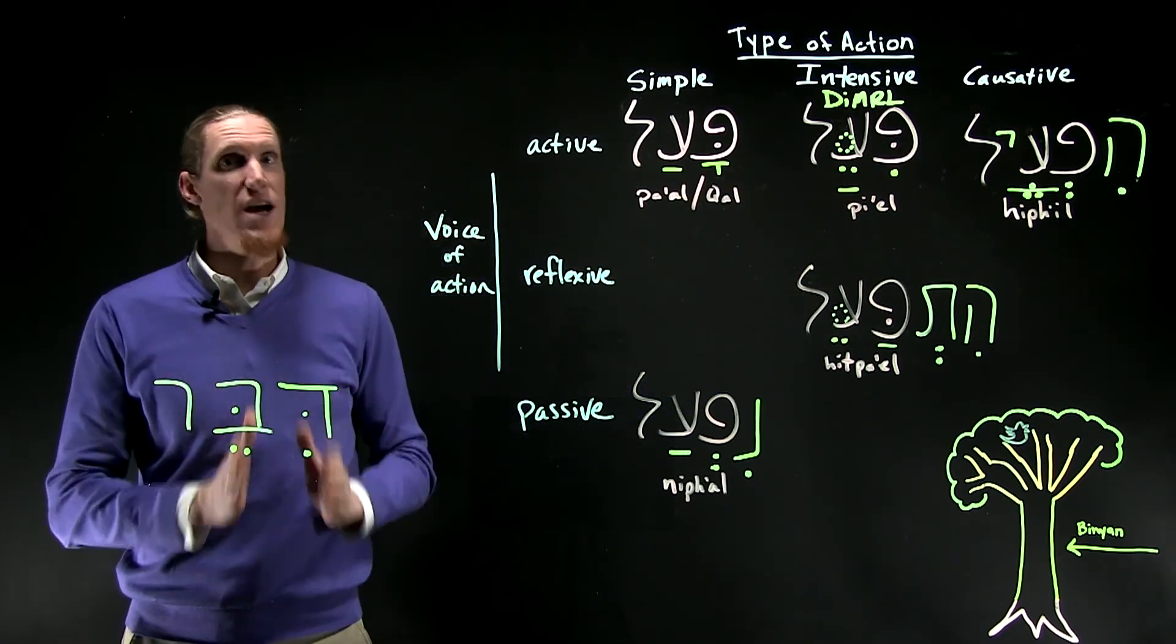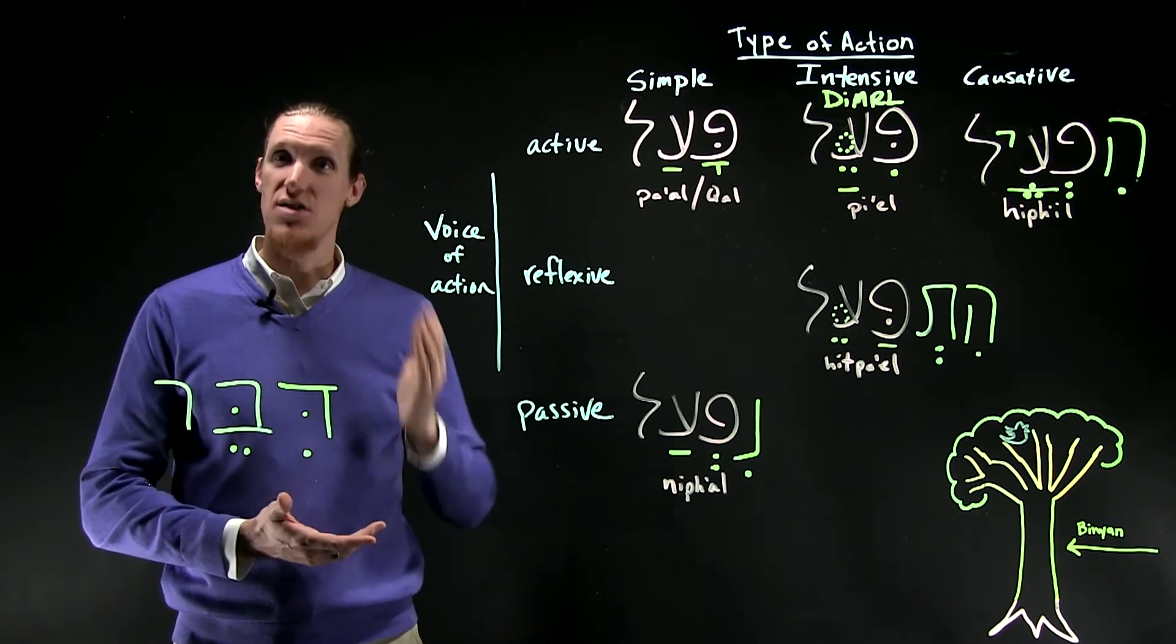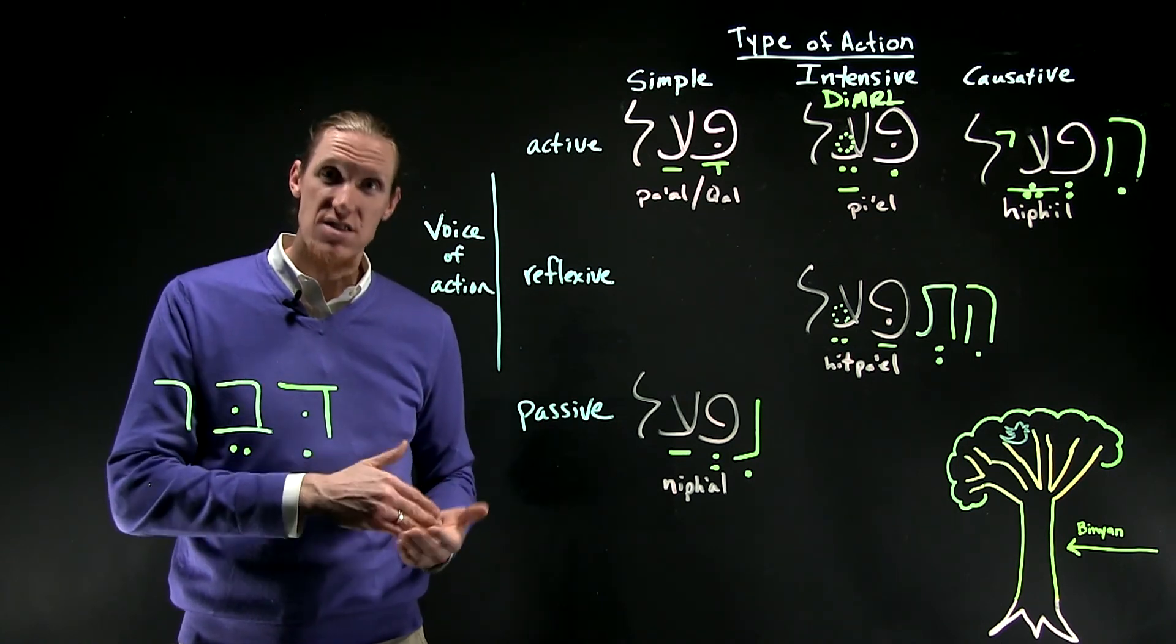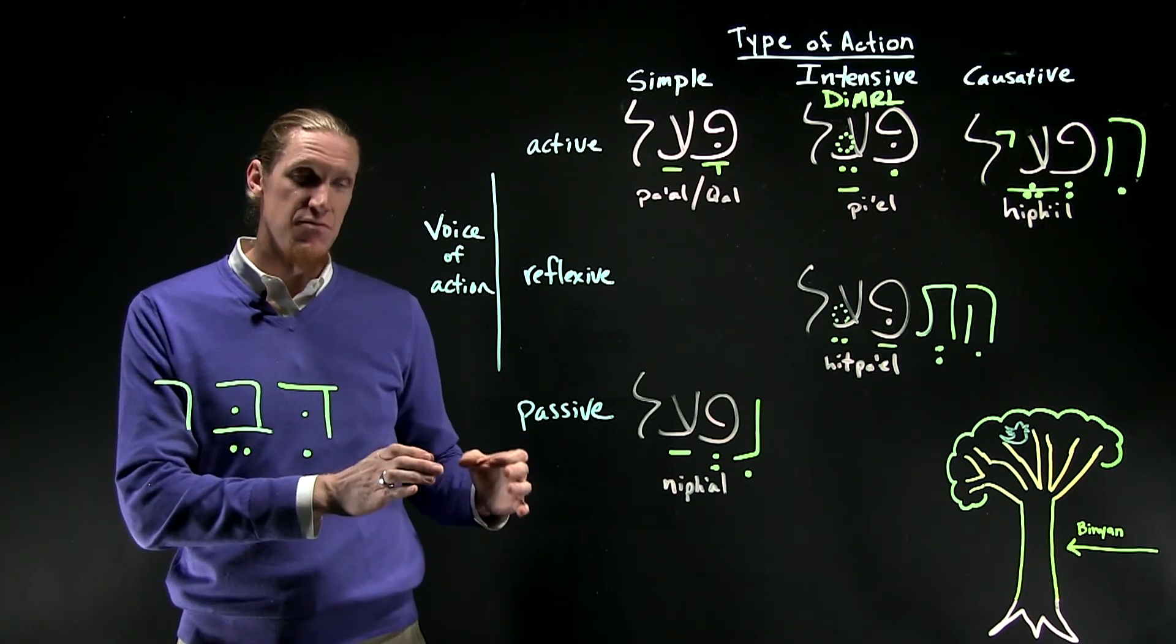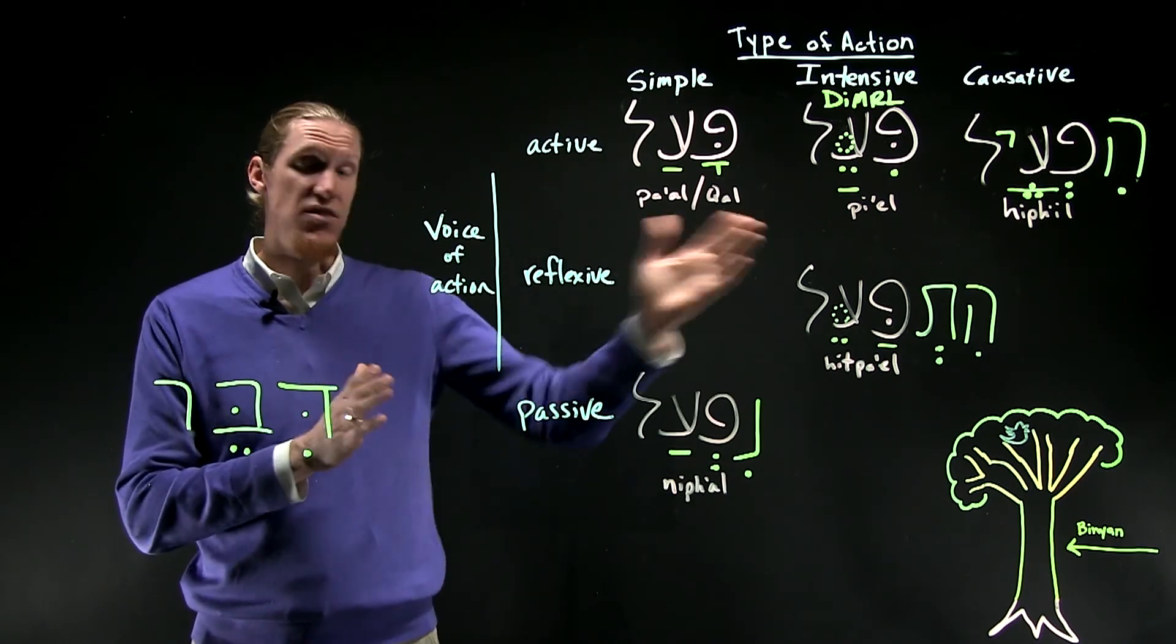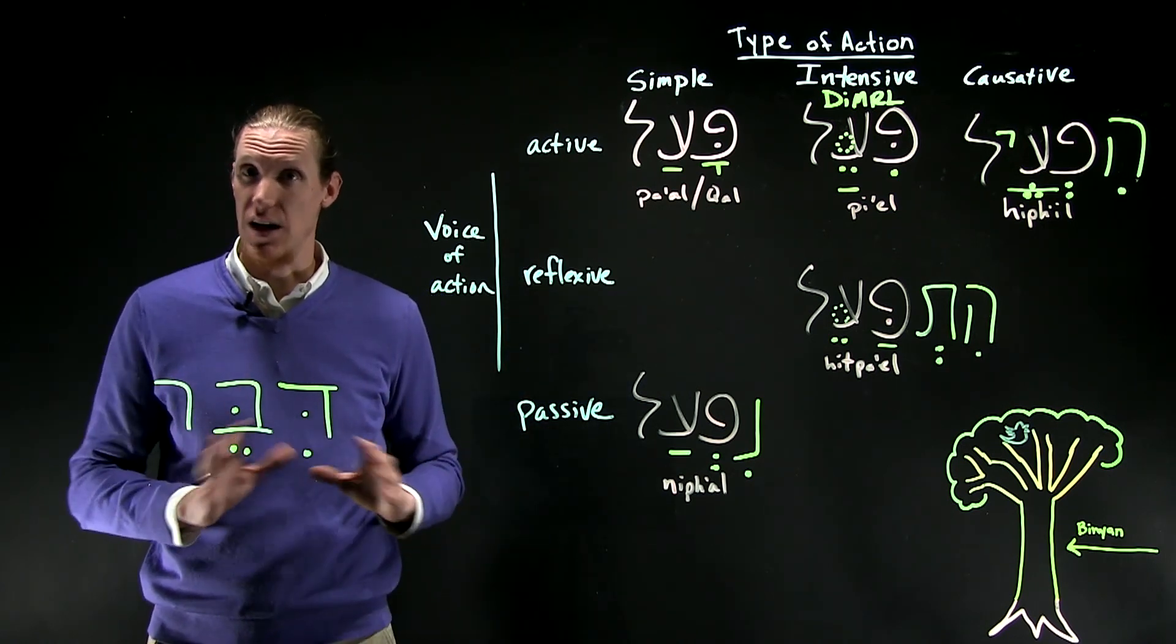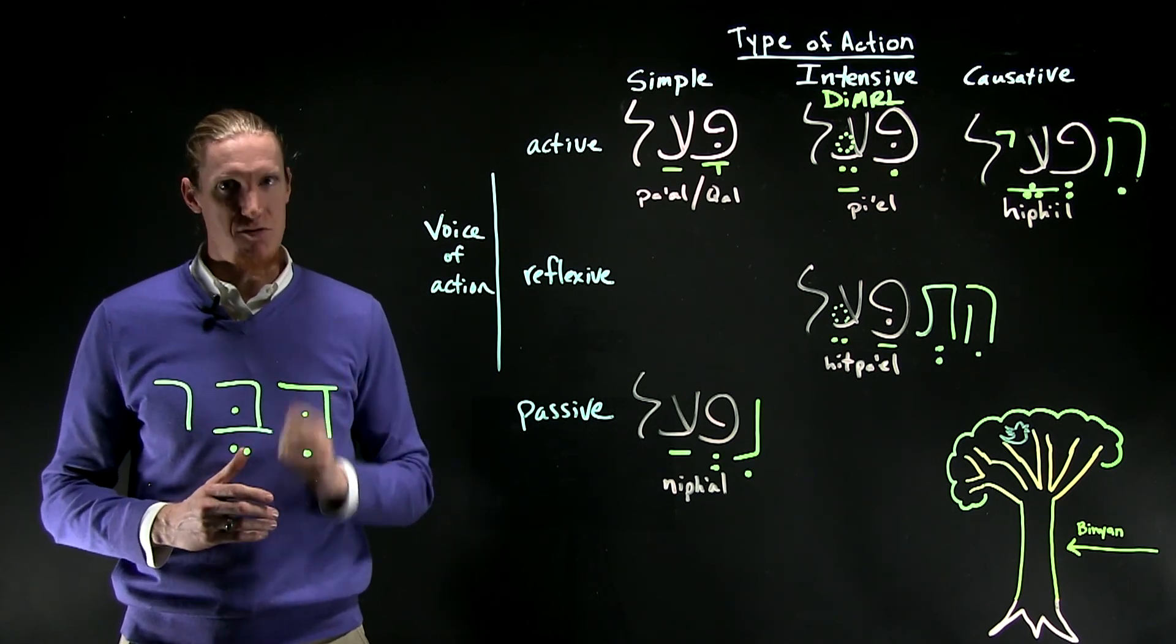The only way to get 100% foolproof is to find the root of the verb, go to the lexicon, go to the verb stem in which that root appears, and read the meaning. Oftentimes, if you have a hif'il, it will be a causative, active meaning. But not every kind, not every time. So that's really important to keep in mind. The lexicon is your friend.